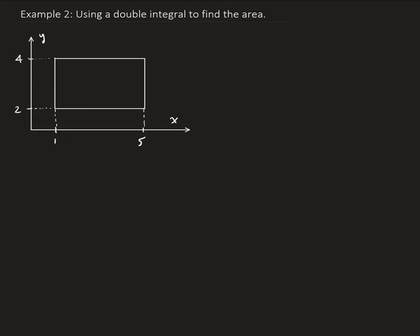In this example, we're going to use a double integral to find the area of the region that's given here. So let's put our represented piece this way. That's going to be our represented piece, and this is going to be dy. So the area is going to be equal to — we're going to use a double integral here.